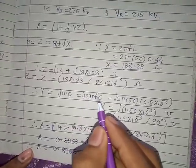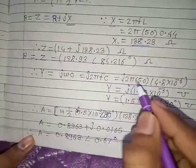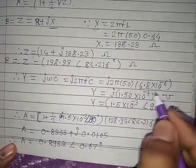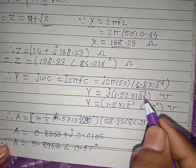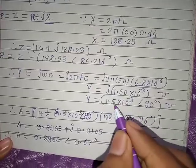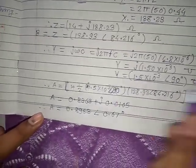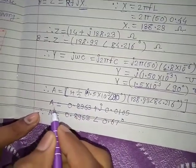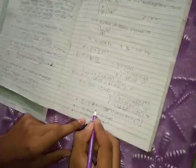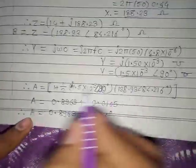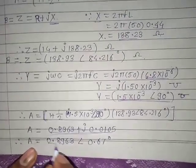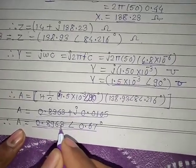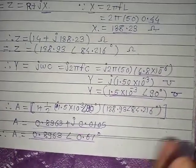The admittance Y = jωC = j2πfC = j × 2π × 50 × 4.8×10⁻⁶, giving Y = j1.5×10⁻³ siemens. Now calculating the A parameter using A = 1 + YZ/2 and substituting the values of Y and Z in rectangular form, we get A = 0.8963 ∠0.67°.